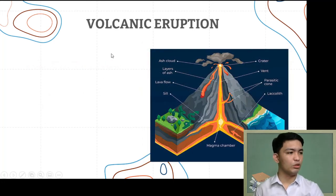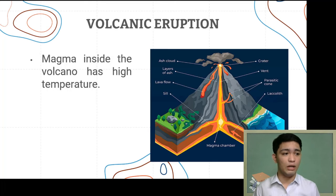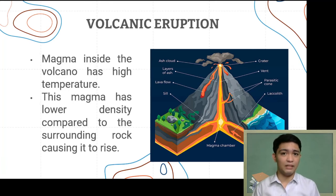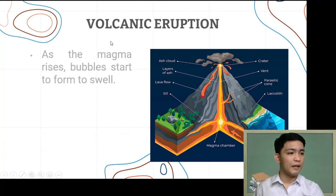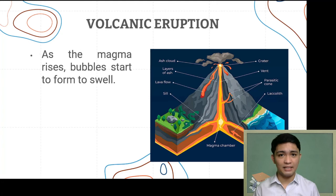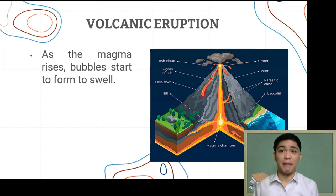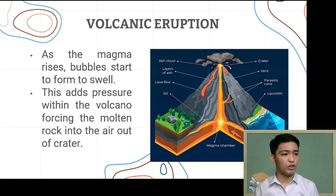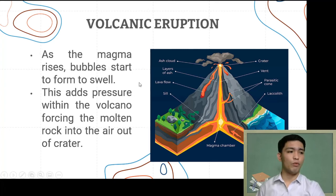Going back to volcanic eruption: the magma inside a volcano has high temperature and lower density compared to the surrounding solid rock. Because of this, the magma rises. As the magma rises, bubbles start to form from the gases dissolved in it, causing the magma to swell or expand further. As it continuously expands, the pressure within the volcano builds up and eventually forces the molten rock out of the crater.